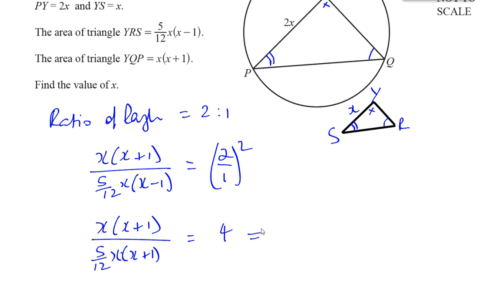So you have x(x+1) is equal to 5/12 times 4 times x(x-1). Now, 5/12 times 4, they cancel out, you're left with 5/3. So (5/3)x(x-1).